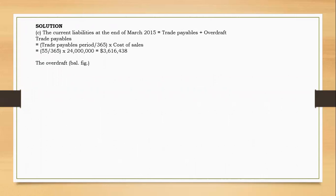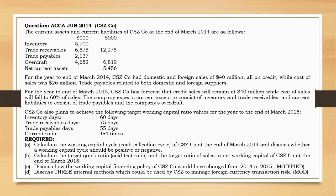Going back to the question, we also need current assets — that is inventory as well as trade receivables. The question states that current assets consist of inventory and trade receivables. We have inventory days of 60 and trade receivable days of 75. We have credit sales of 40 million and cost of sales of 24 million. Let's determine the figures for inventory as well as trade receivables using the relevant formulas.